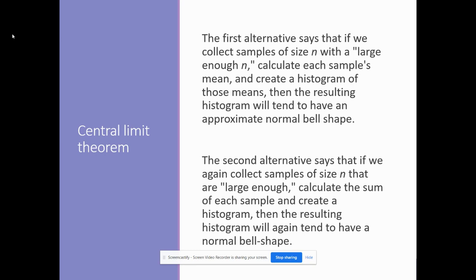The second alternative says: if we collect enough samples of a certain size that are large enough, we can calculate the sum of each sample and it will make a histogram too. Within each of those samples, I'm adding the numbers together to get the sum, and if I plot those sums, I'm going to have a nice histogram with a normal bell-shaped curve. Again, I'm talking thousands or millions of samples to make that bell-shaped curve. This approximation means that we can take an unknown sample distribution — say it's exponential, or it's skewed to the left or the right — and if I keep adding more samples, eventually it's going to make that bell-shaped curve.